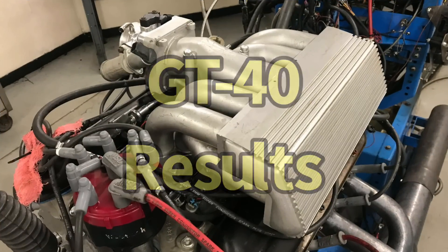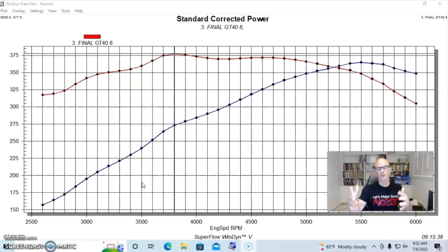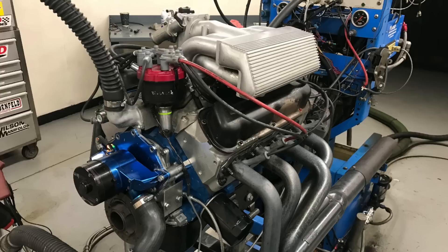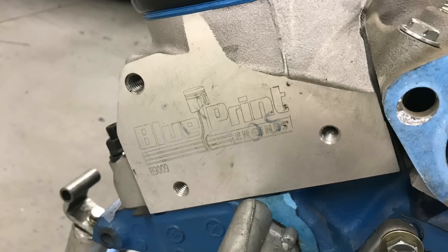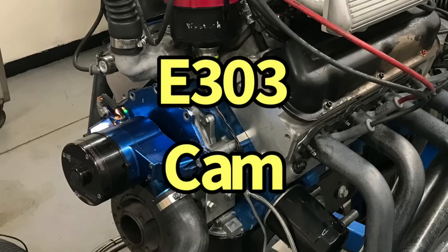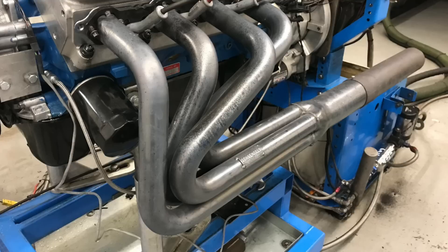So the question is, how well did the GT40, the tubular version, actually perform on our test mule? You remember, stock 302, it had the Blueprint CNC-ported aluminum heads, it had the E303 cam. I'll go ahead and put the specs up here. And we had inch and three-quarter long tube headers.